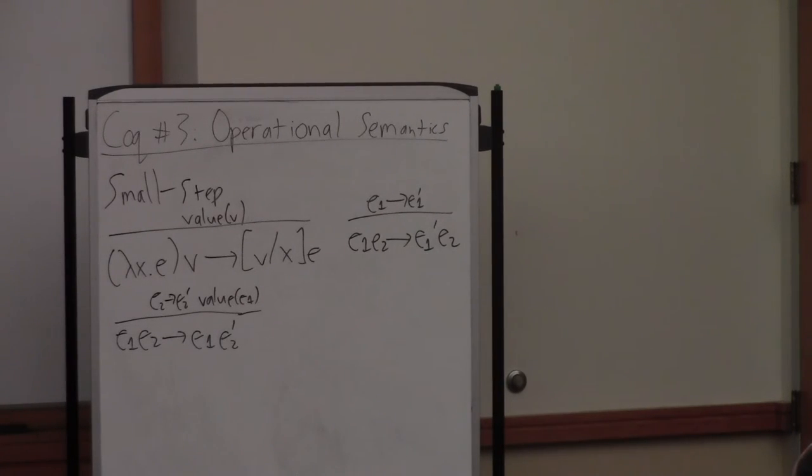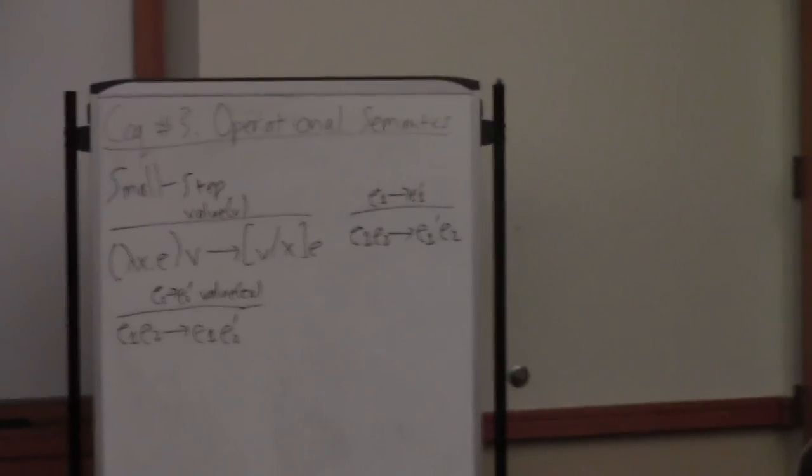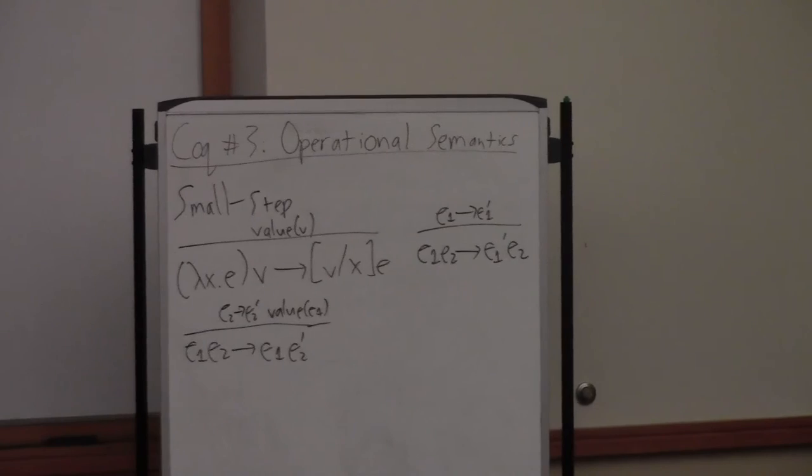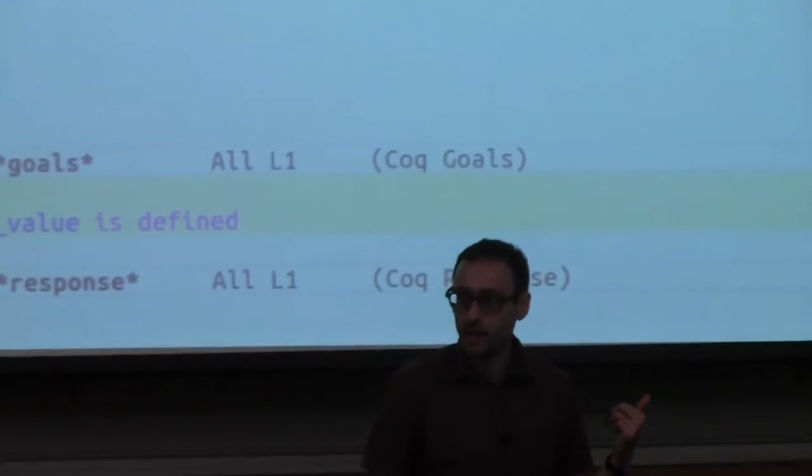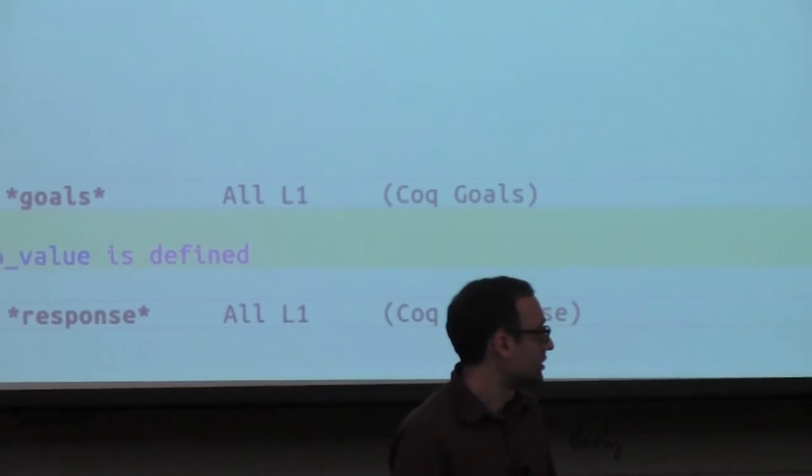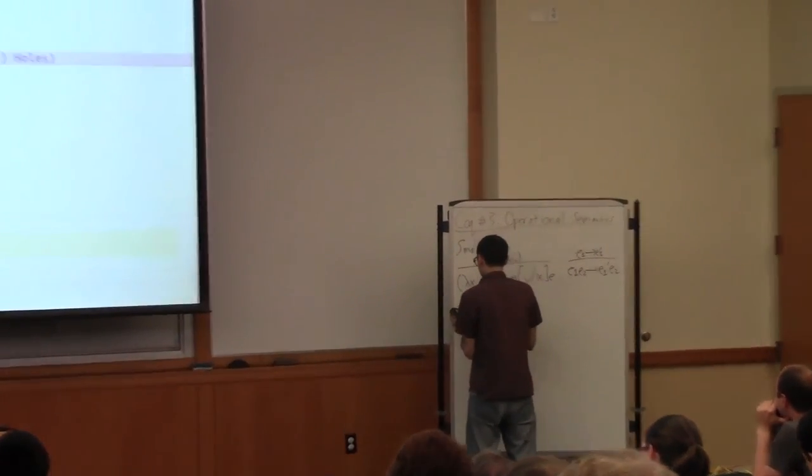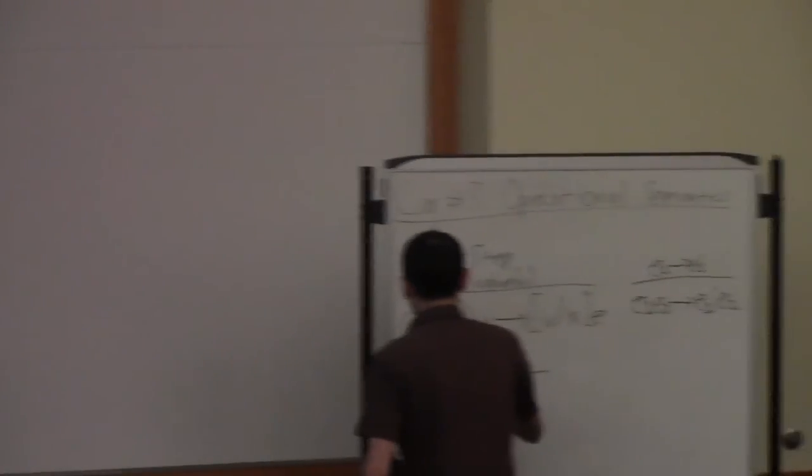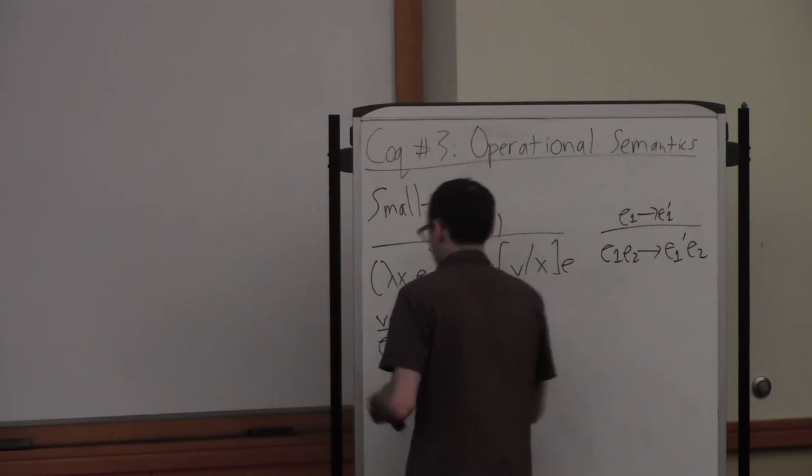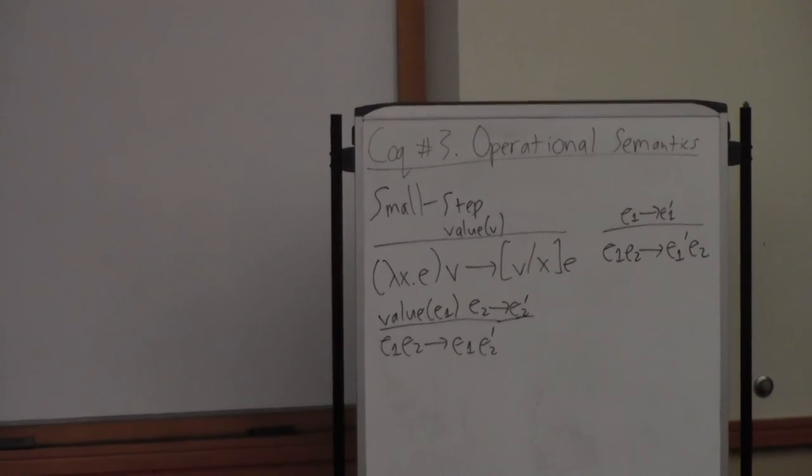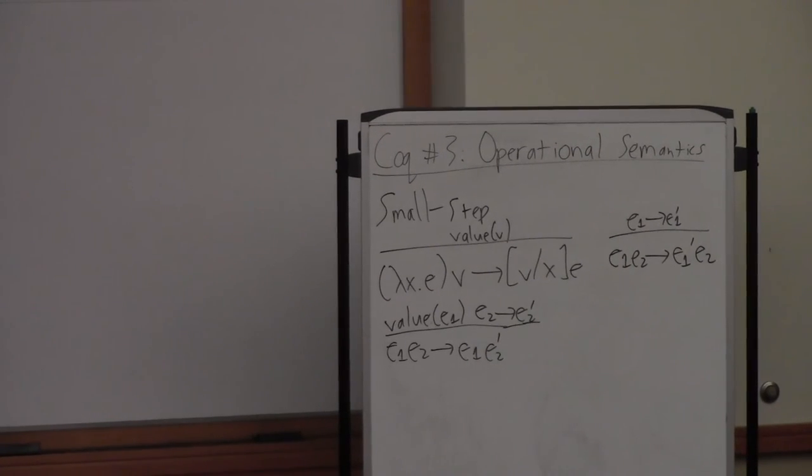So these extra premises about certain things being values are important to define exactly what we mean by call-by-value execution. There's a nice property that this relation has. It's sort of a general property we might talk about in semantics or relations where that property would no longer be present if we remove those extra requirements for things to be values. Any ideas what I might be thinking of? This is a deterministic relation for any term that could appear on the left-hand side of this arrow there's at most one term that could appear on the right-hand side.